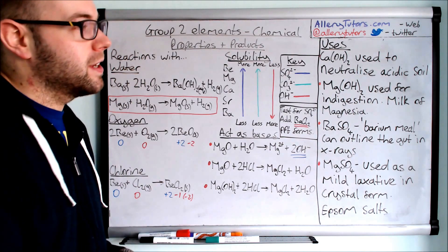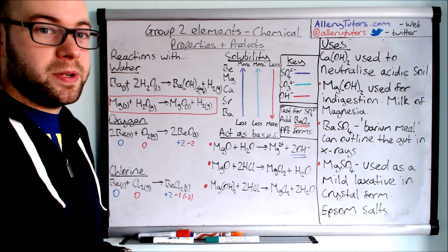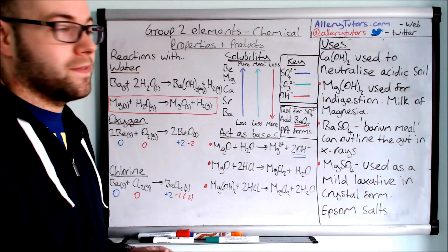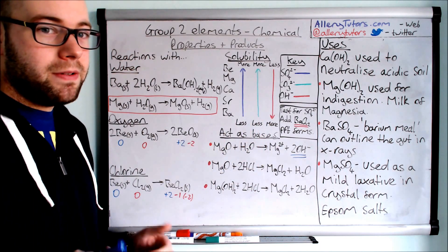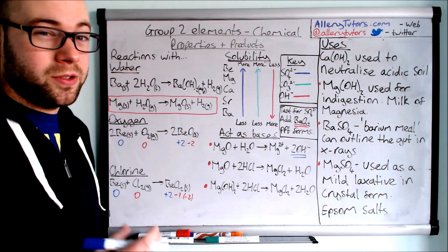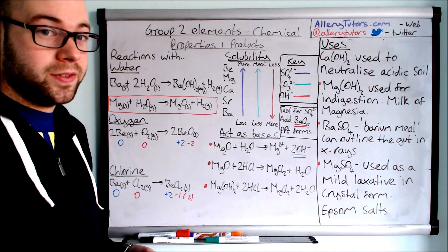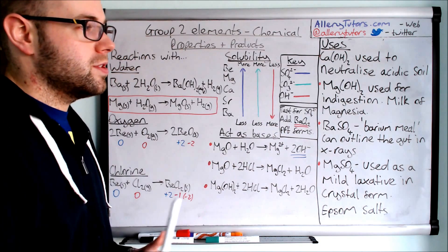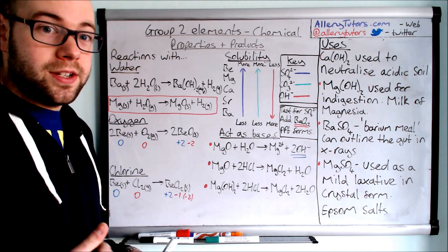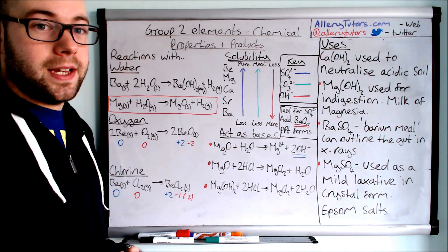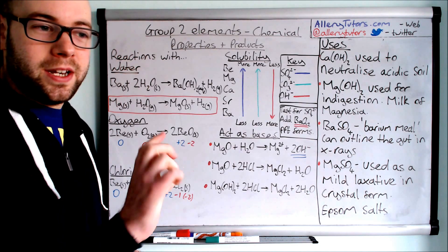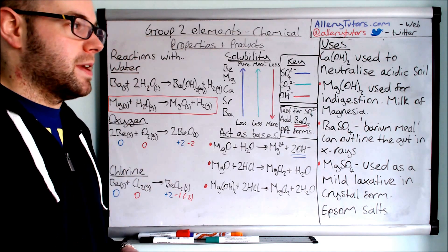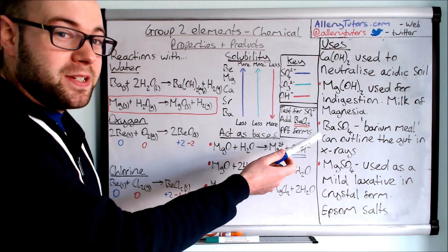Finally, let's look at the uses of some of these group 2 compounds — they've been used for hundreds of years. Calcium hydroxide is used to neutralize acidic soils, which is very useful for growing crops that don't grow well in acidic soils and need more neutral or alkaline conditions — very useful in the agricultural industry. Magnesium hydroxide is used for indigestion, in particular milk of magnesia, which you may have seen in pharmacies. It's a white liquid that helps ease pain after eating a lot of or spicy food.